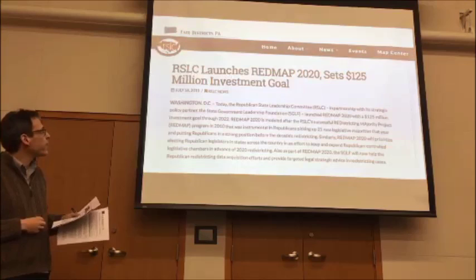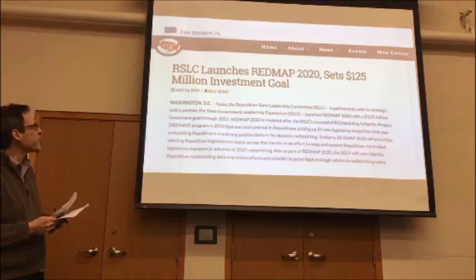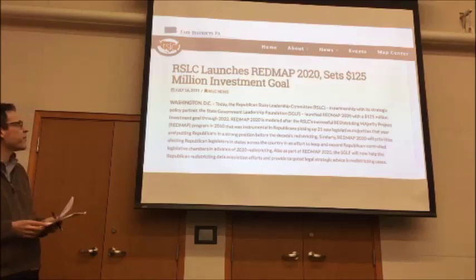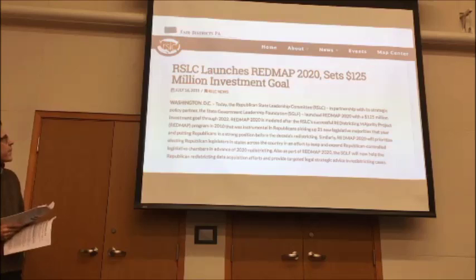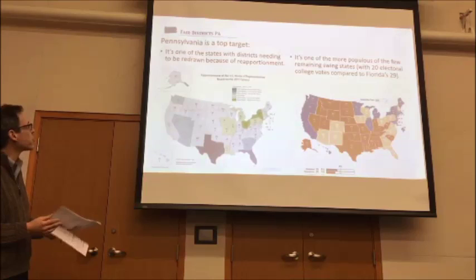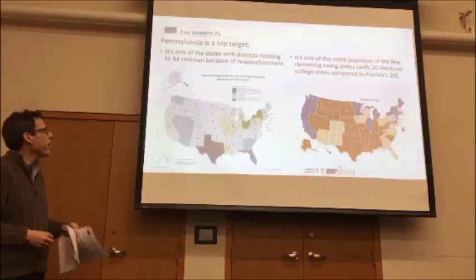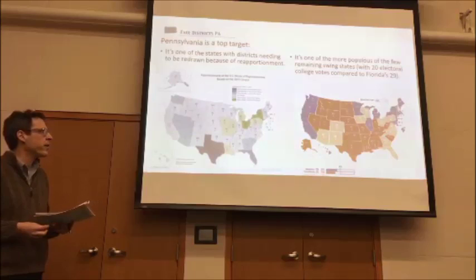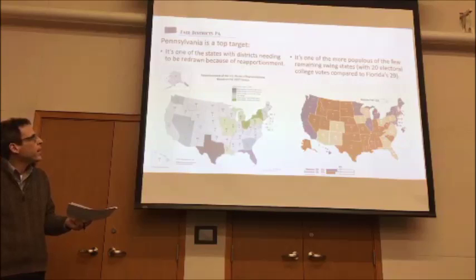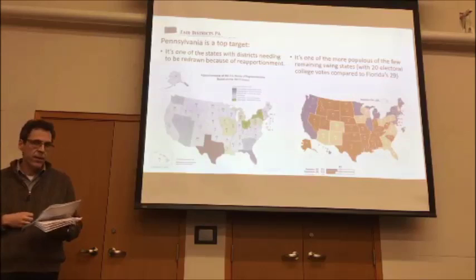In 2020, the Democrats are putting on a new program called Advantage 2020. So if you design mapping software, you're going to have a very lucrative market. If you're a citizen who just wants your vote to count, it's not such a great thing. The Republicans, having seen REDMAP 2010 work very well, are going to try to raise 125 million dollars. Pennsylvania is a top target — it's quite likely we're going to lose another district, and we're a swing state.